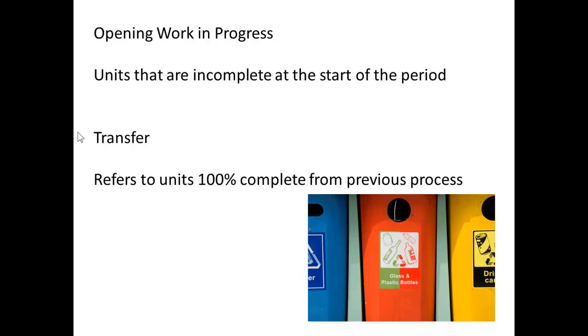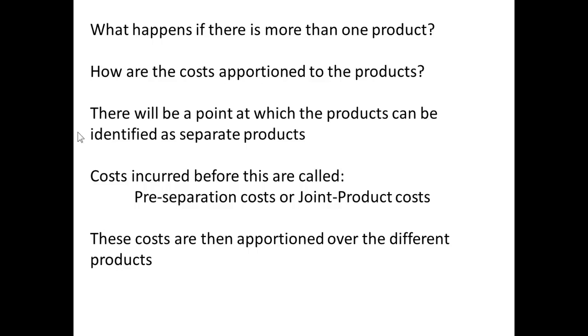Opening work in progress means that units are incomplete at the start of the period, whereas a transfer refers to units that are 100% complete from the previous process.